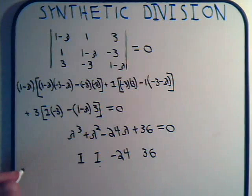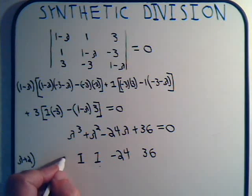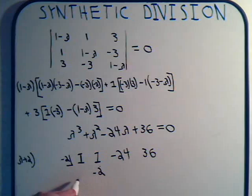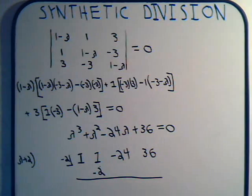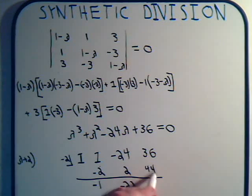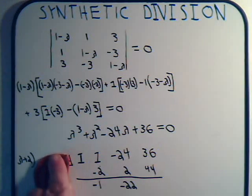What about lambda plus 2? Here we write down minus 2, and here we write down minus 2. Add and multiply. This will be minus 1 times negative 2 is plus 2. This is minus 22 times minus 2 is plus 44. That's not zero, so we discard that.